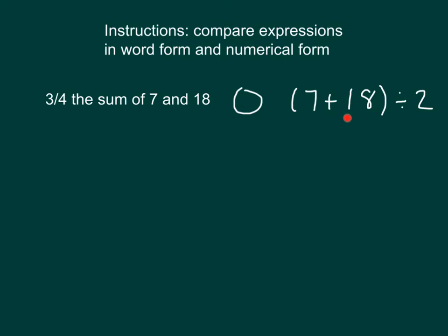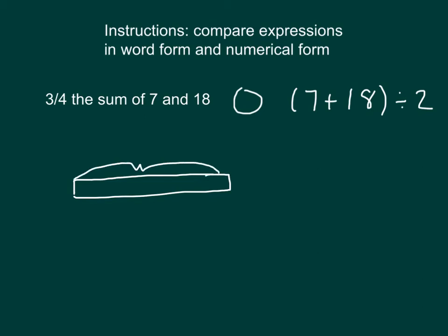So we have 7 plus 18 divided by 2. For that expression on the right, let's draw that bar model. Here we have 7 plus 18 — that's that sum — and it says that we're dividing it by 2, so we're dividing it in half. This is our question mark here. This bar model represents 7 plus 18 divided by 2.